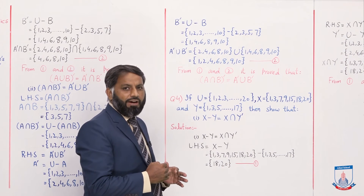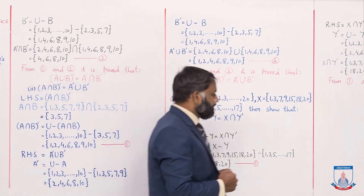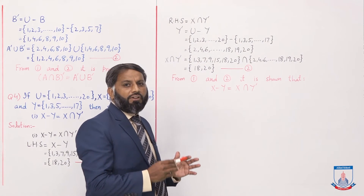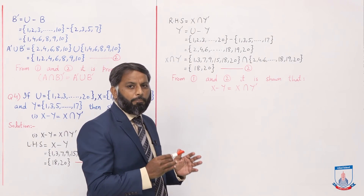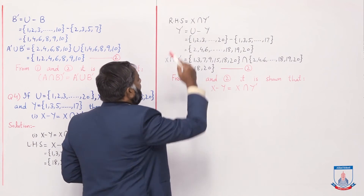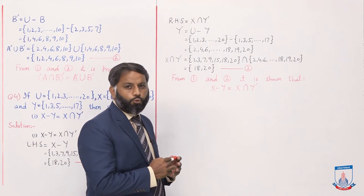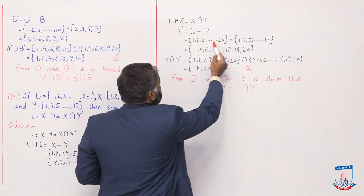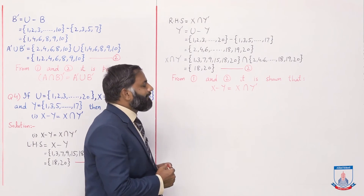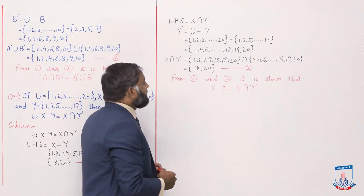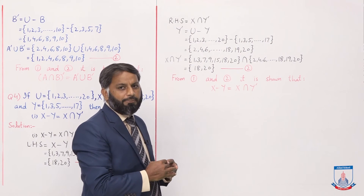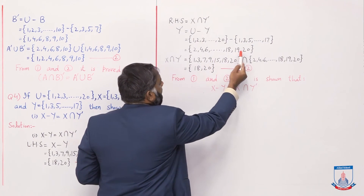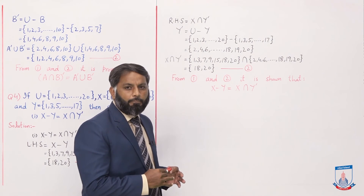Right hand side: X∩Y'. To find the intersection of X and Y', first we find Y': Y' = U minus Y. Set U = {1, 2, ..., 20} minus set Y = {1, 3, 5, 7, ..., 17}. All odd numbers from 1 to 17 are in set Y, so all even numbers from 2 to 18 will come. So Y' = {2, 4, 6, 8, 10, 12, 14, 16, 18, 19, 20} — also 19 and 20 which are not in Y.